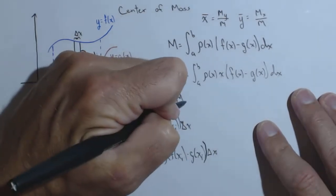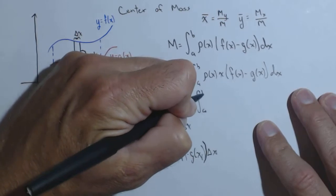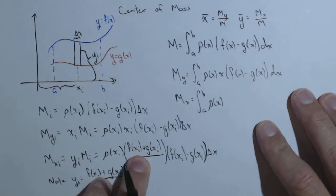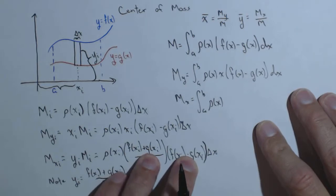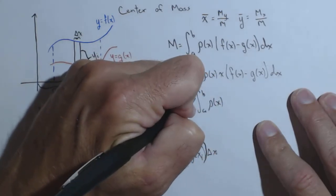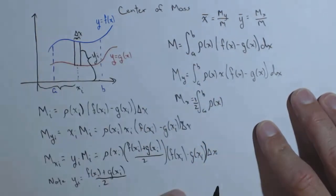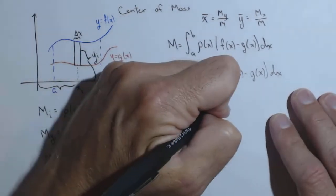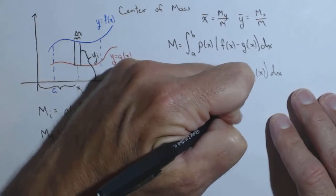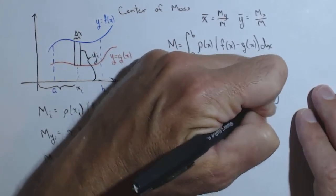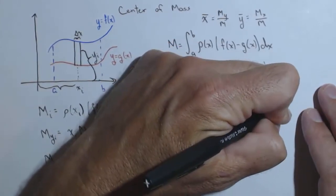So I now have my m sub x. It's going to be the integral from a to b of rho of x. Now, one of the things that we're going to do: notice here I've got f of x sub i plus g of x sub i times f of x sub i minus g of x sub i. That's difference of squares. So I'm going to multiply these two together. And we can move the one half—we can put it with rho of x over one half or we can move the one half out front. We just need to make sure that one half is in there. And now, this will be written as f of x squared minus g of x squared dx.